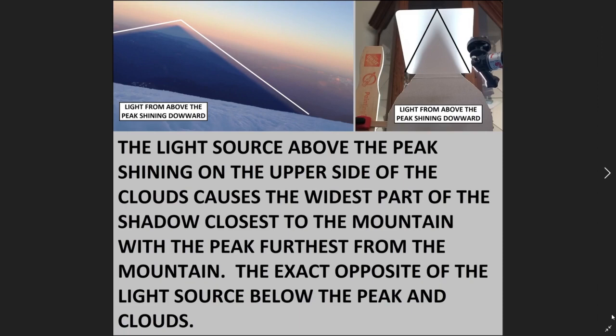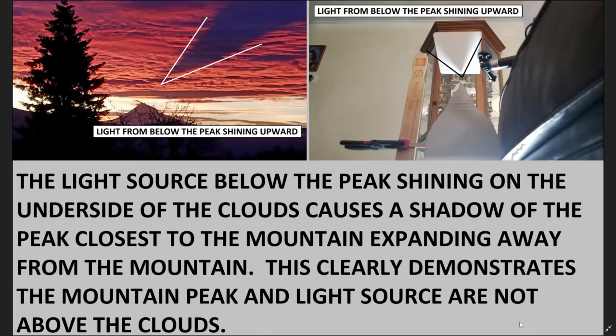So what happens if it's the other way around? What happens if the clouds are above the mountain peak and the light source is below the mountain peak? Well, what you get is this image. On the left, the clouds are above the peak, light source is below the peak. The shadow of the peak is closest to the mountain, not the widest area. And on the right is the image I took — the simulated clouds using the white diffusion filter from my LED light panels. The light source is below the peak, so it casts a shadow upward onto my simulated clouds. The peak of the shadow is closest to the peak of the mountain and then spreads.